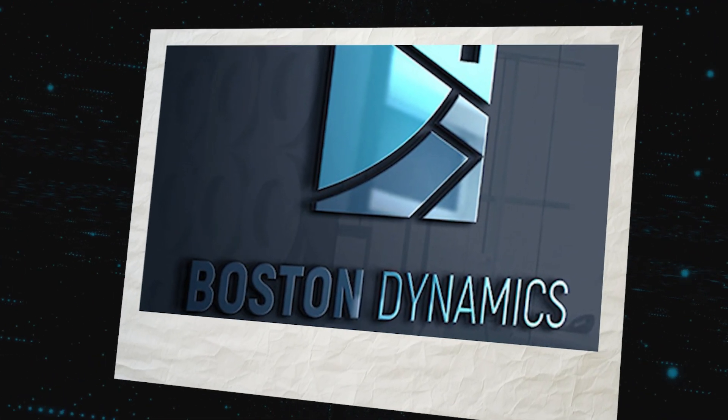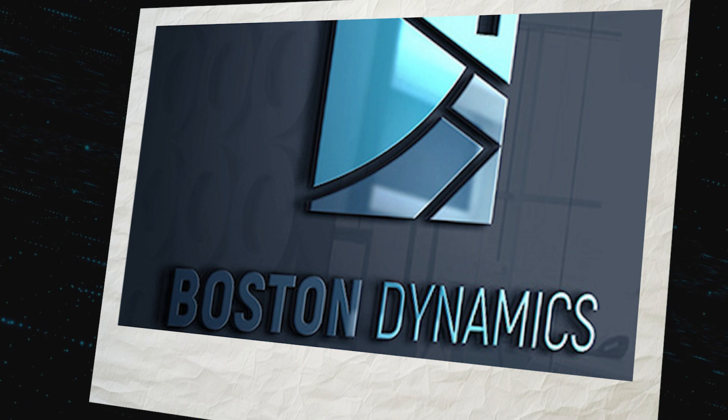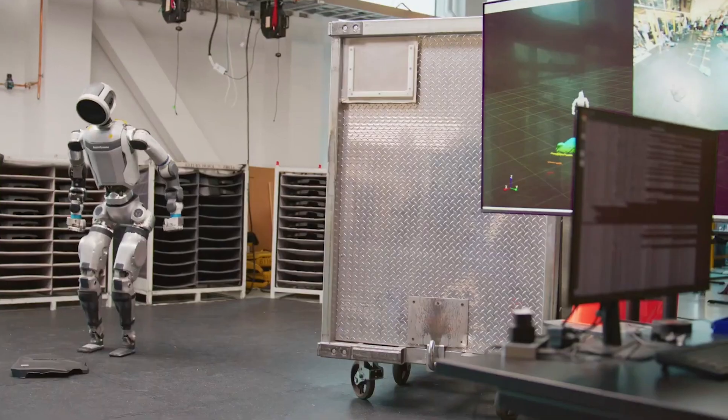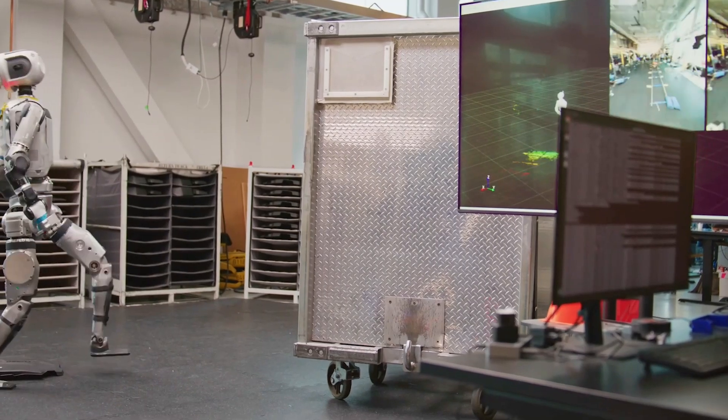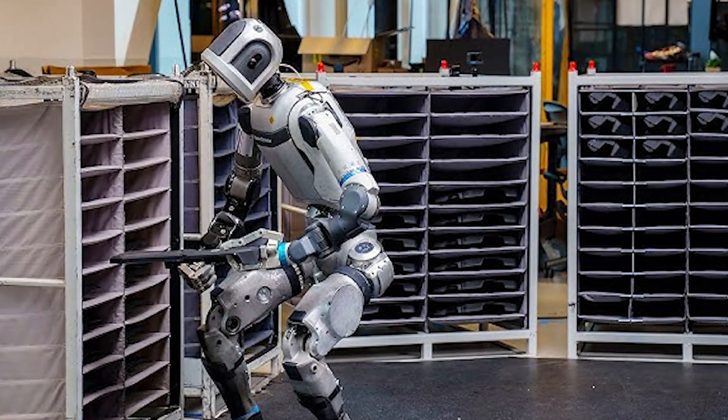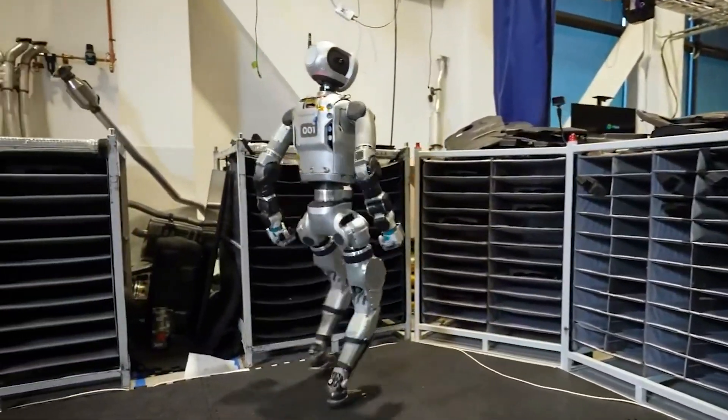Boston Dynamics has been refining humanoid robots for over 15 years, and this latest version of Atlas marks a major shift. The move from hydraulics to fully electric actuators means it's quieter, cleaner, and easier to maintain, making it far more practical for long-term use.